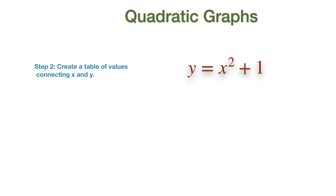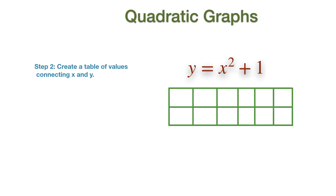For example, if you wanted to draw the graph of Y equal to X squared plus 1, you'd need a set of suitable X and Y values. It is a good idea to use some mixture of negative and positive X values. Suppose the X ranges from minus 2 to 2, then the Y values can be easily calculated by substituting X values into the function Y equal to X squared plus 1.